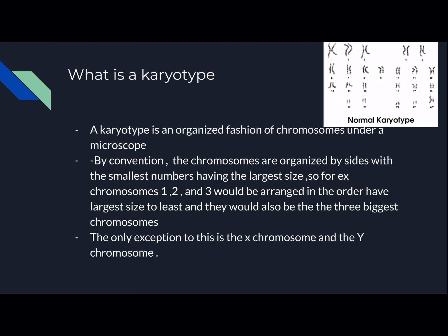By convention, chromosomes are organized by size. The smallest numbers have the biggest chromosomes. For example, if we looked at chromosome 1, 2, and 3, we can tell that these chromosomes are the three biggest out of the whole karyotype. There is an inverse relationship: the smaller the size, the bigger the number. The only exception to this idea is the X chromosome and the Y chromosome.